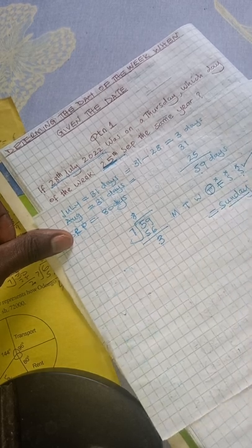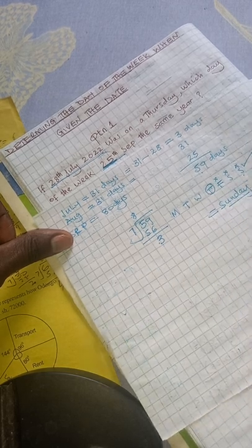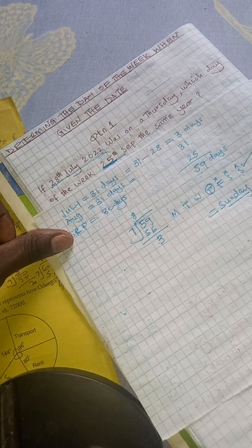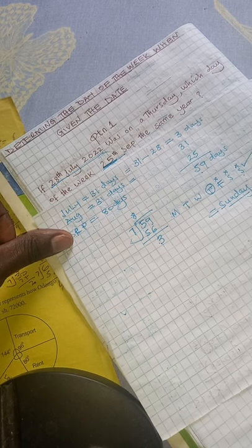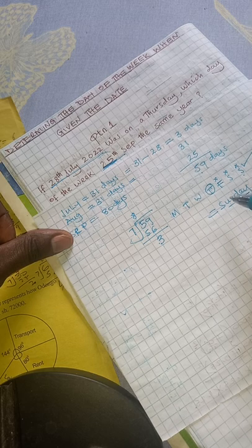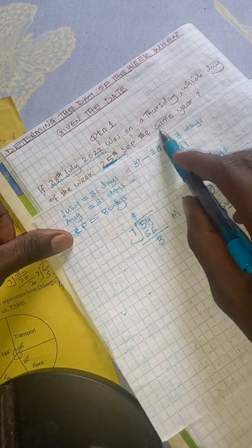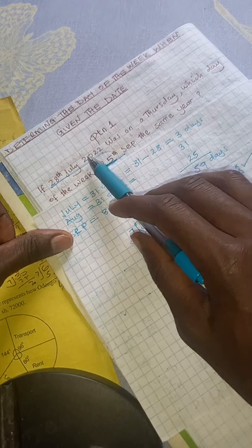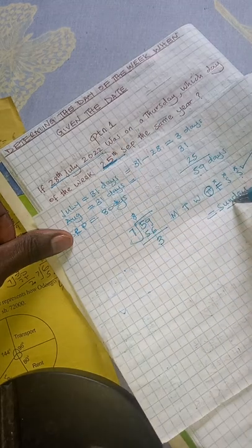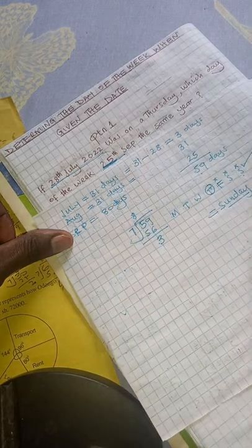You can always confirm your answer using the calendar. After confirming, you will find that the answer — that is, 25th September 2022 — was on a Sunday. So this is our answer.